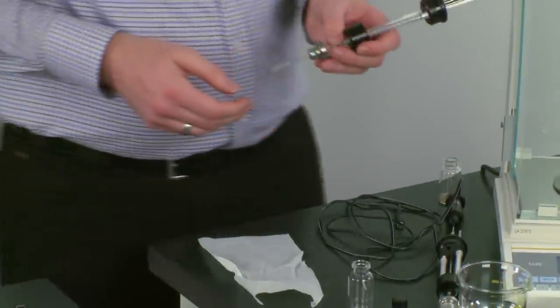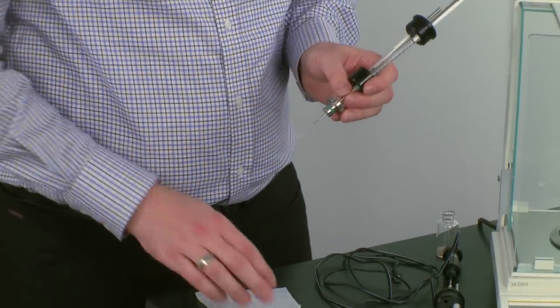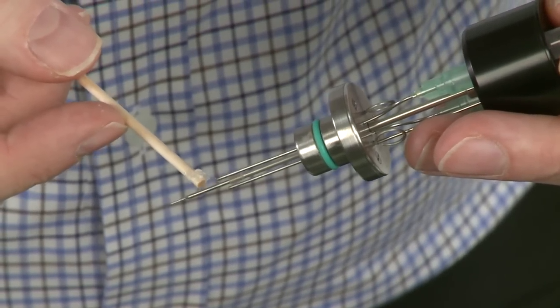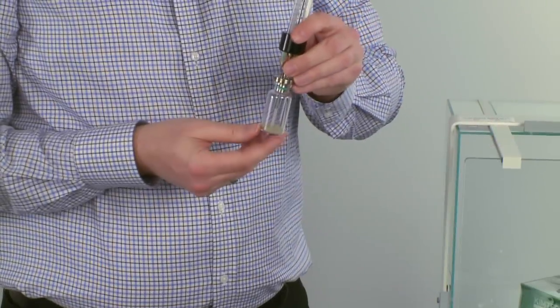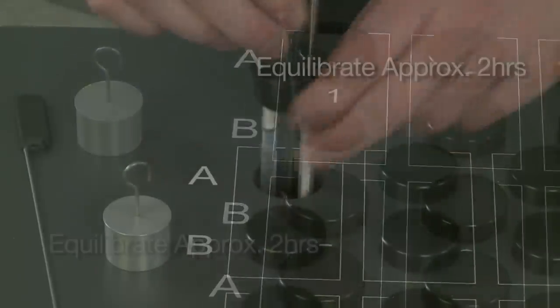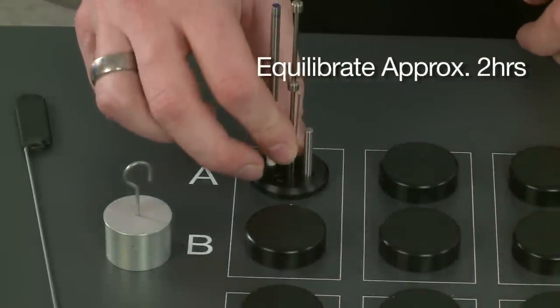The last preparation step is to seal the open cannula with grease. Then mount your prepared cement sample and put both inside the Tamair.